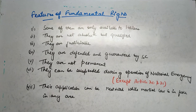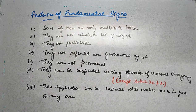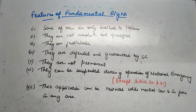Third point is they are justiciable — meaning if your fundamental right is violated, you can go to court. They are justiciable, allowing a person to move the court for their enforcement if and when they are violated. Fourth point is they are defended and guaranteed by the Supreme Court directly. If someone's fundamental right is violated, they do not need to go first to the district court, then the high court, and then the Supreme Court — no. They can directly appeal to the Supreme Court.